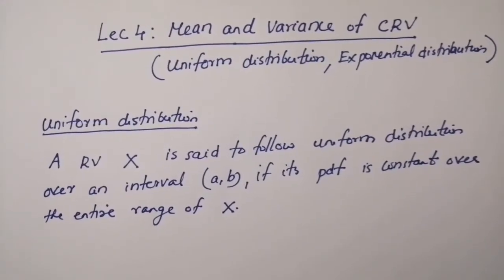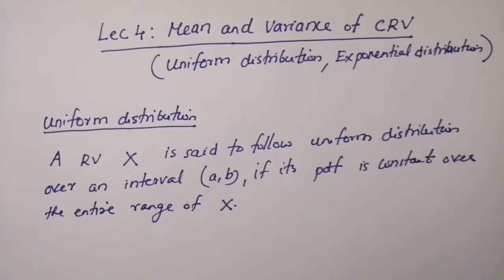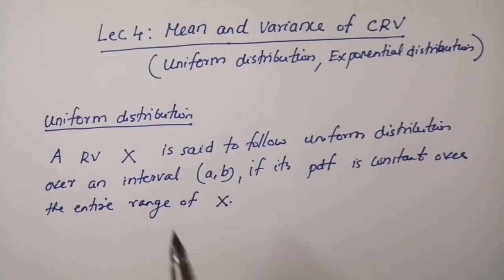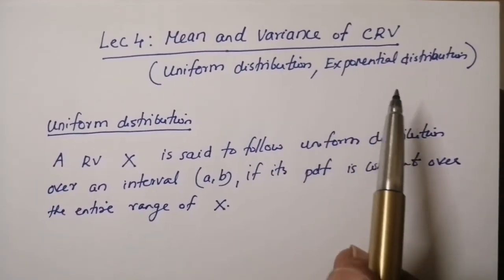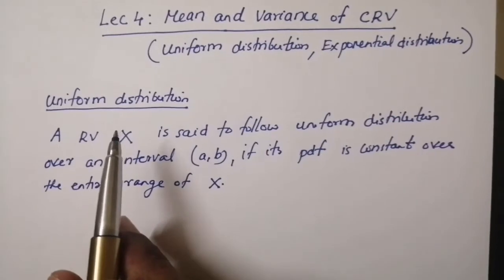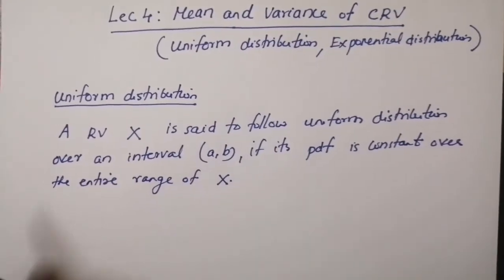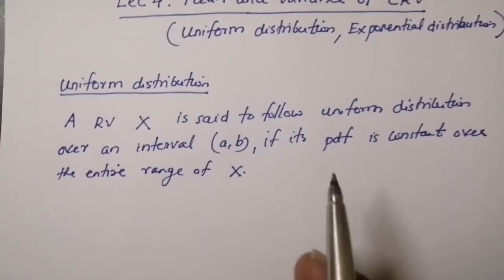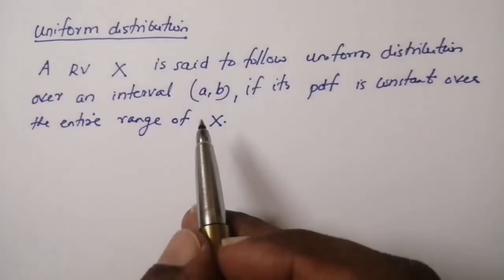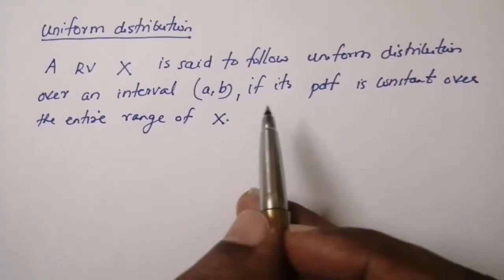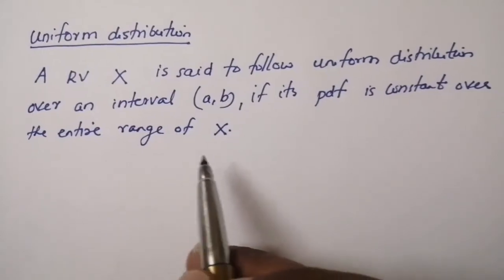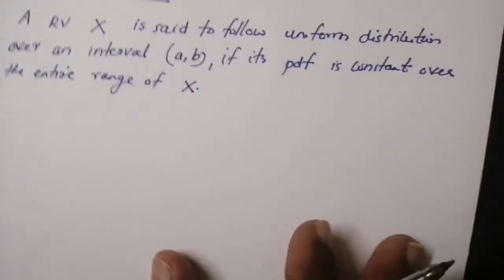Hello everyone. Today we will find the mean and variance of some continuous random variables, namely uniform distribution and exponential distribution. First we will look at the uniform distribution. A random variable X is said to follow uniform distribution over an interval a to b if its PDF is constant over the entire range of X.